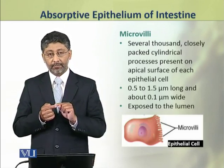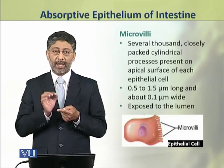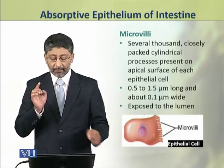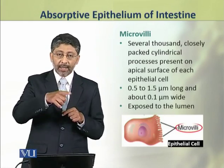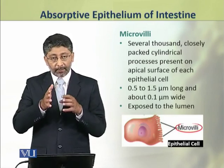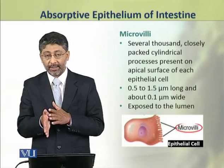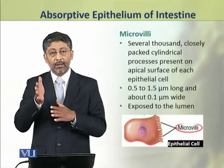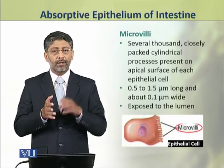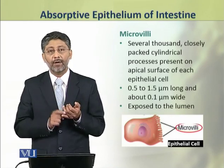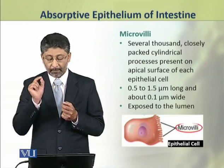The micro villi. Many thousands of closely packed cylindrical processes are present on the apical surface of each epithelial cell. The epithelial cell membrane is not smooth on its luminal side, where the intestinal lumen faces the epithelial cell — there are micro villi. Each micro villus is about 0.5 to 1.5 micrometers long and about 0.1 micrometer wide.